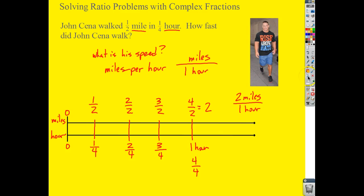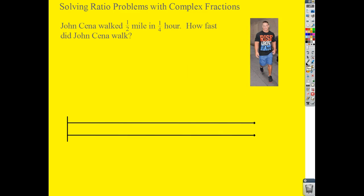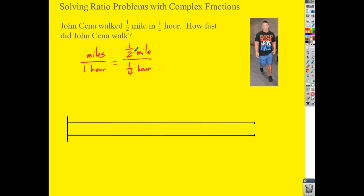Now let's do this as a complex fraction, because a double number line is not the only way. If I need to find miles per one hour, I set up the ratio: one-half mile divided by one-fourth hour. That's the same as one-half divided by one-fourth. When you divide a fraction, you multiply by the reciprocal, so I end up with four-halves, which equals two miles per hour.